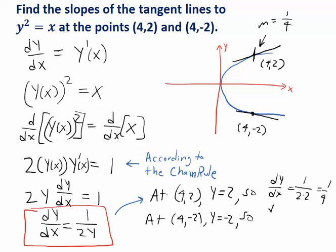And so if you plug that into the formula for the derivative we just found, it would be 1 over 2 times negative 2, giving you a slope of negative 1 over 4. And in this rough sketch, this looks approximately correct.